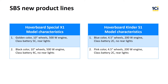The first variant: golden color, 10-inch wheels, 500-watt engine, 4C-class battery, no rear lights. The second: blue color, 4.5-inch wheels, 200-watt engine, 2C-class battery, no rear lights. The third: pink color, 4.5-inch wheels, 200-watt engine, 2C-class battery, with rear lights.